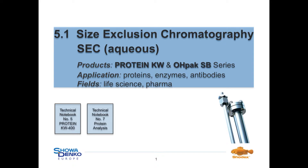First of all we want to start with aqueous based gel filtration chromatography. The corresponding best-selling Shodex columns are the Protein KW and OH-PAC-SB series. The main applications in this mode are the separation and analysis of water-soluble macromolecules like proteins, enzymes and antibodies. Therefore these types of columns are mainly used in the fields of life science, biotechnology and pharmaceutical industry. If you need more detailed information about size exclusion chromatography as well as about protein analysis, please take a look at our technical notebooks number 5 and 7 which you can find on our website.